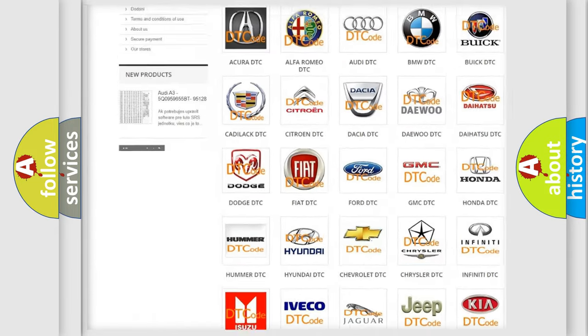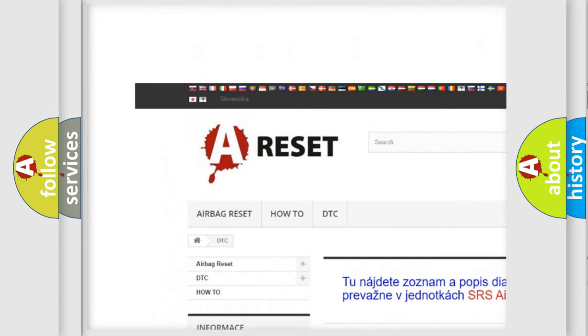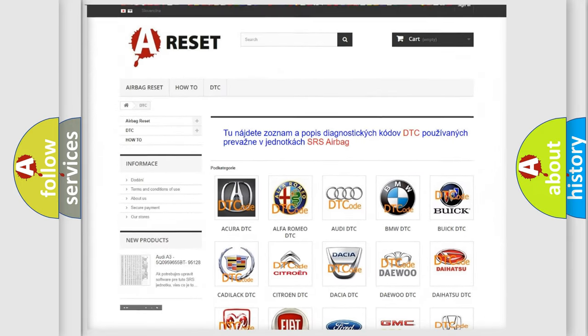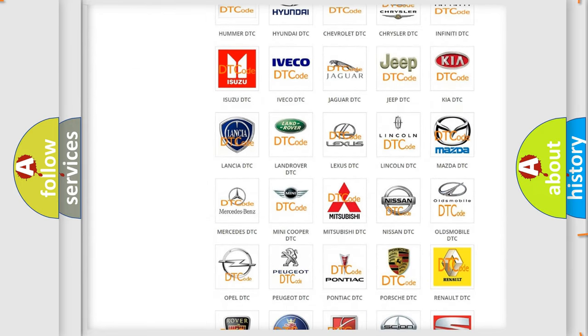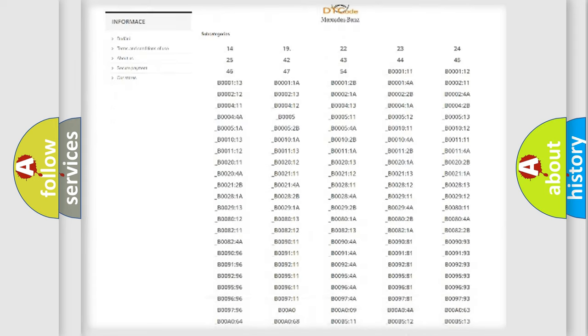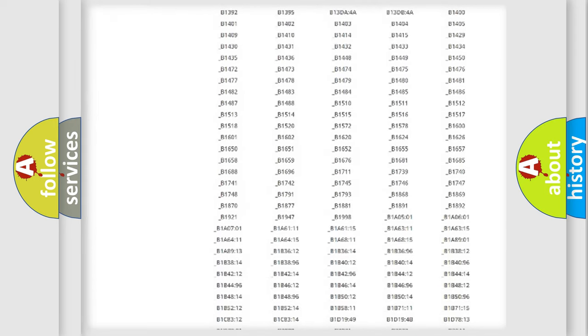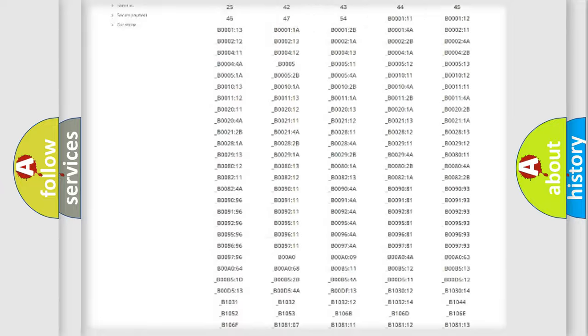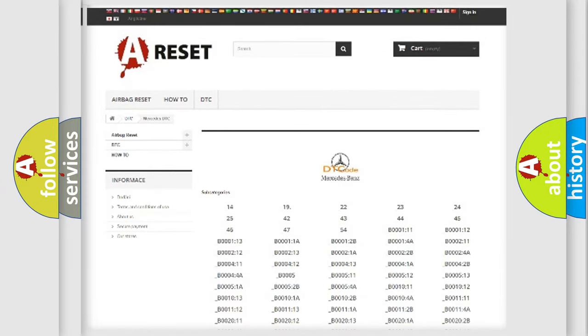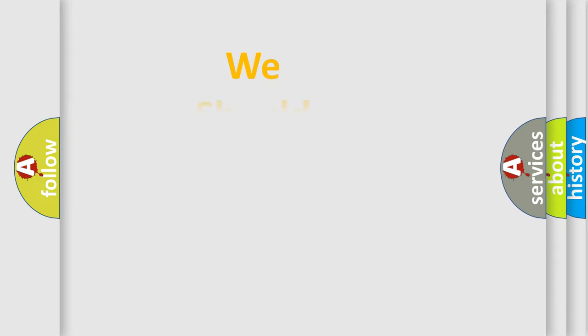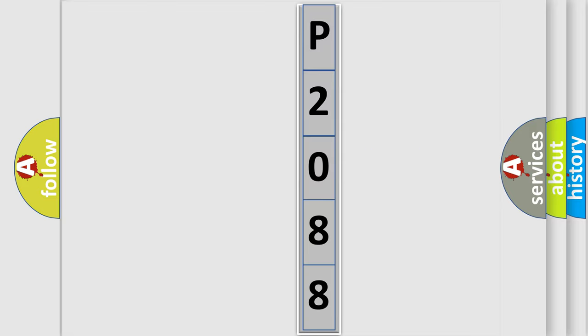Our website airbagreset.sk produces useful videos for you. You do not have to go through the OBD2 protocol anymore to know how to troubleshoot any car breakdown. You will find all the diagnostic codes that can be diagnosed in Mercedes vehicles, and many other useful things. The following demonstration will help you look into the world of software for car control units.